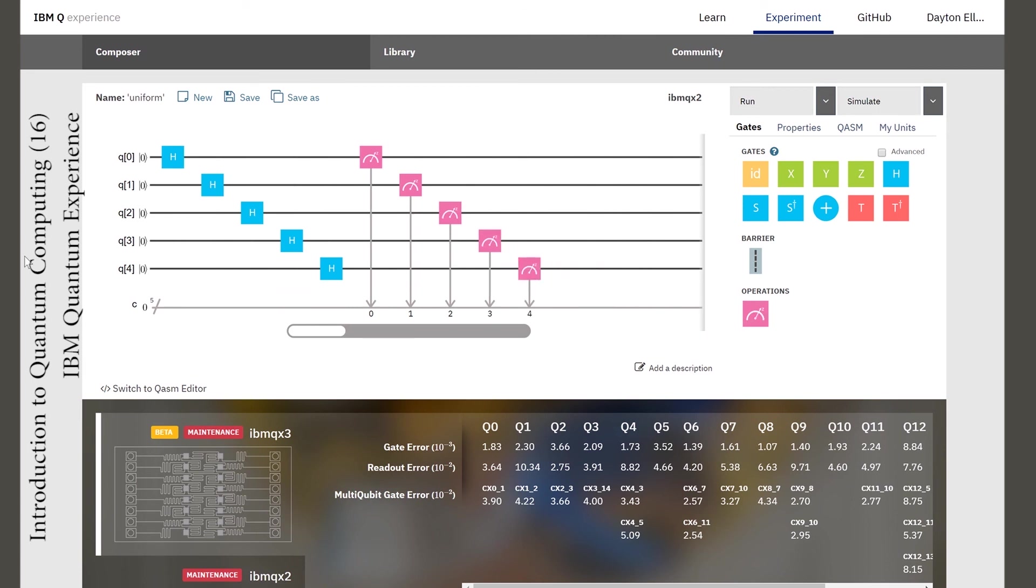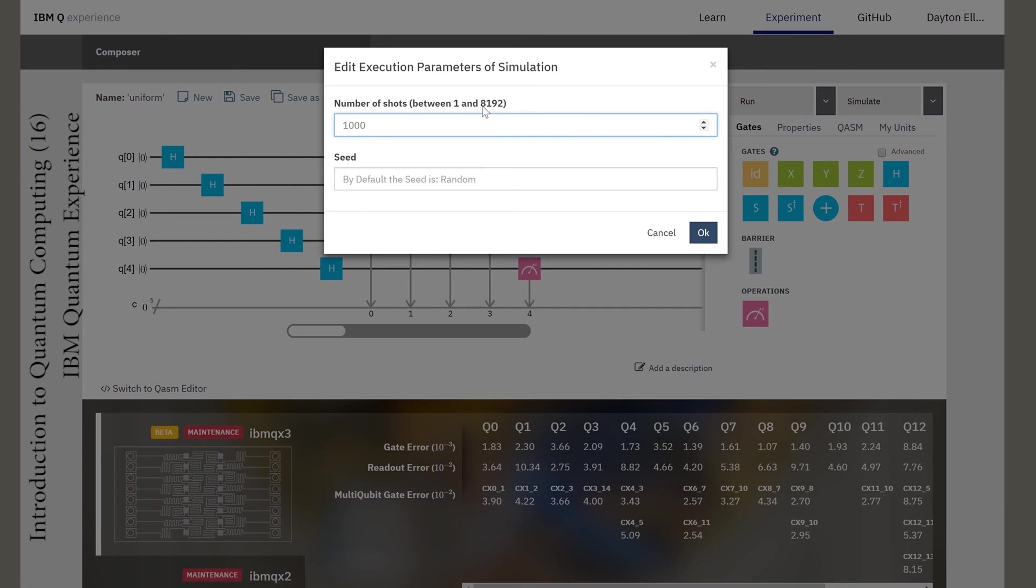Any single run of this quantum circuit will return the state the system collapsed to upon measurement. So we'll need to run it many times, at least 32, to get a sense of the probabilities of collapsing to the different basis states. I'll run it 5000 times.